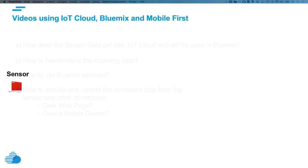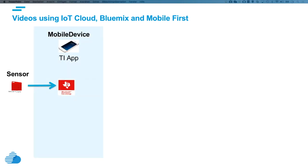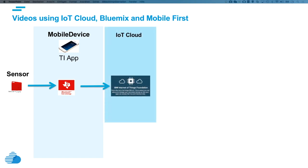First of all we have a sensor. The sensor is the point of interest, and here our sensor provides temperature data. The temperature data is sent via Bluetooth to an app on a mobile device. This app utilizes the MQTT API to send the data to the IoT cloud on the internet. The IoT cloud provides the actual temperature information, which is provided by the app on the mobile device.